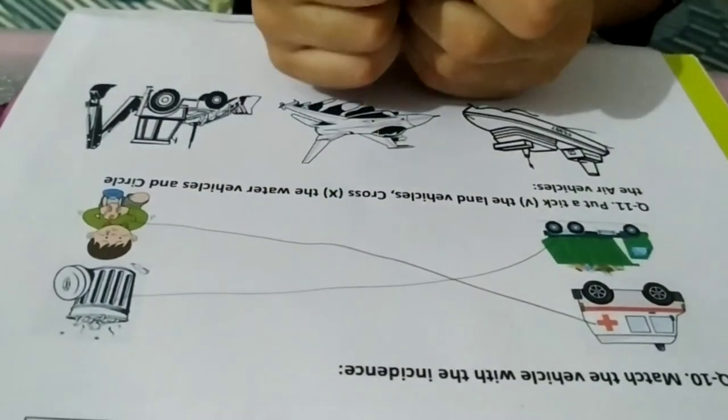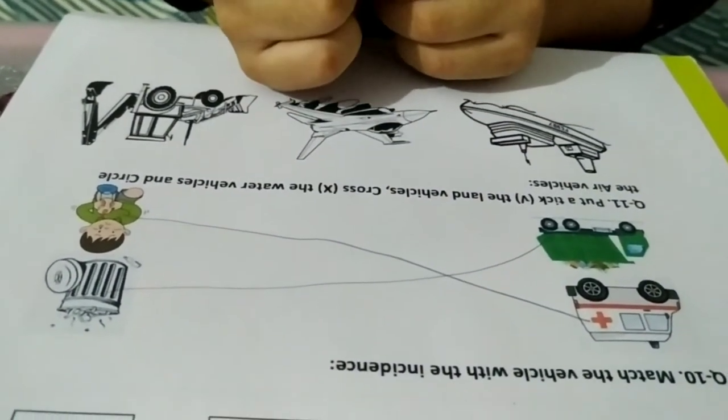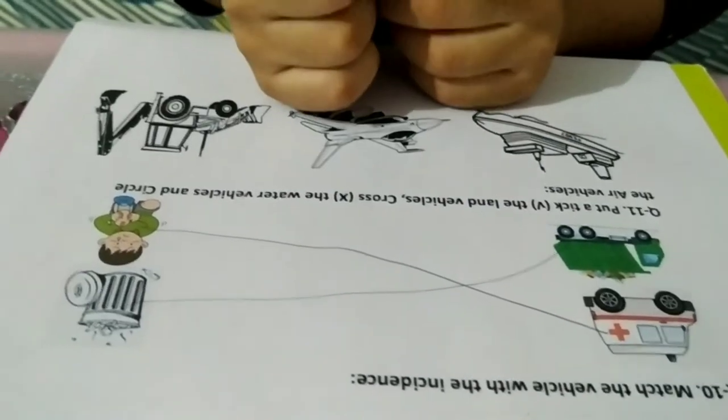Question 11. Put a tick for the land vehicles, cross the water vehicles and circle the air vehicles.